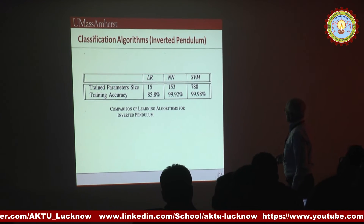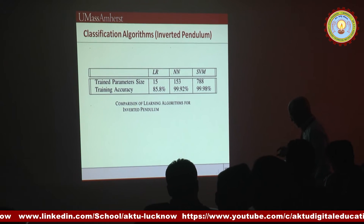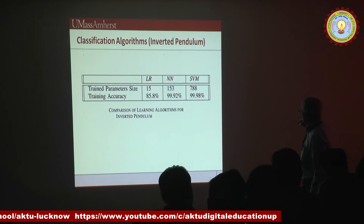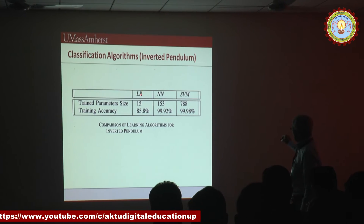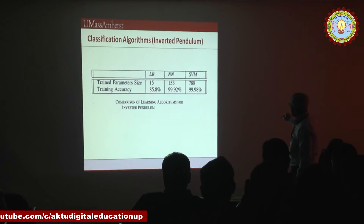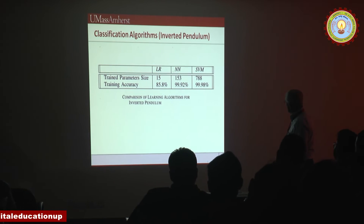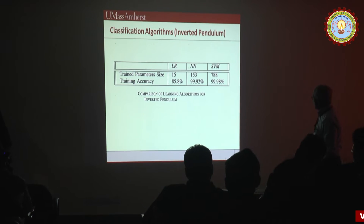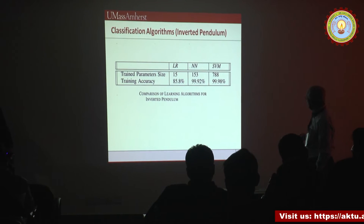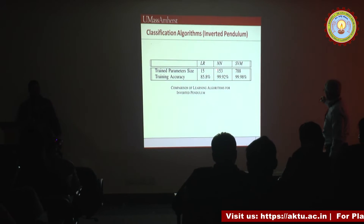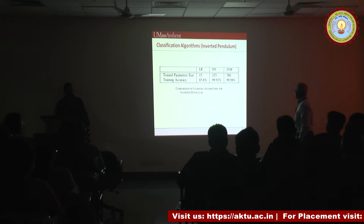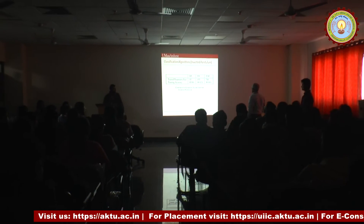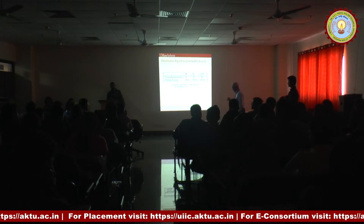Let's see the classification algorithms we experimented with for this case: logistic regression, neural net, and SVM. The accuracy for logistic regression is only about 85%, which is not sufficient. If we move to neural nets, we get much higher accuracy, but we have to pay for it by using a much larger number of parameters — about 10 times more — which means more time-consuming computation, but still within acceptable limits.